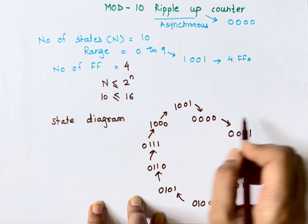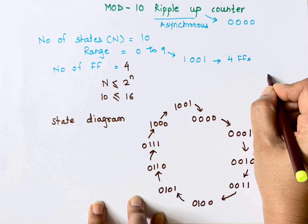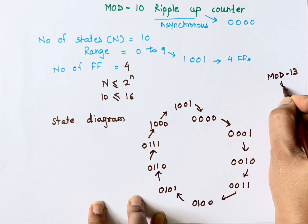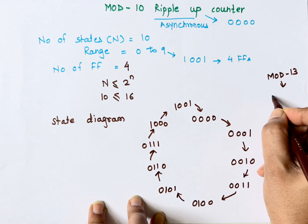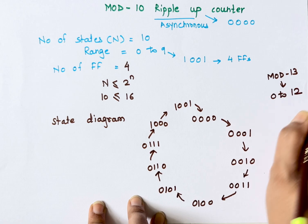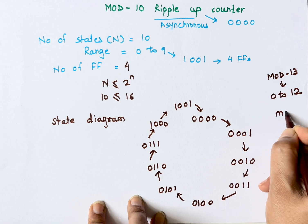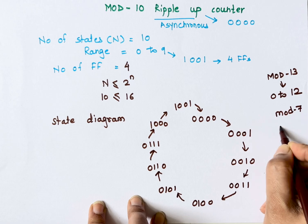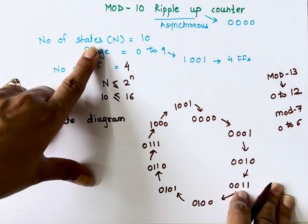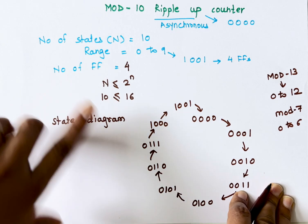It will go back to 0 after reaching the final state. For example, in the case of Mod 13, it will start counting from 0 and end at 12. In the case of Mod 7, the range is 0 to 6. You just need to identify the number of states, range, and number of flip-flops.